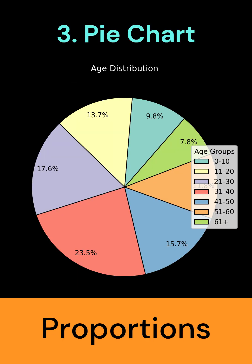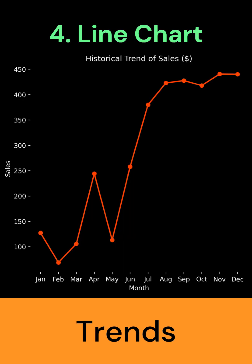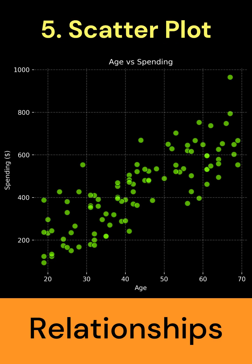Pie charts are great for proportions, in this case distribution of customers by age group. Line charts represent trends, and you can see an increase in trend month over month. Scatter plots show the relationship of two numerical variables, like age vs spending.